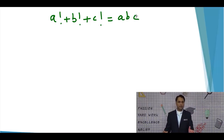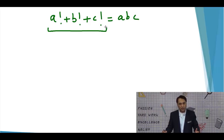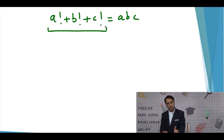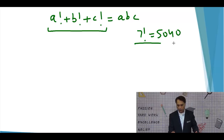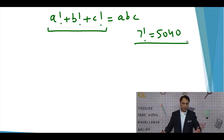Let's look at the strategy. The given equation has the sum of three factorials on the left equaling a three-digit number ABC on the right. This means none of A, B, or C can take a value of 7 or more, because 7 factorial gives 5040 — a four-digit number. Hence 7 cannot be in the system, and by the same logic, 8 and 9 are also eliminated.